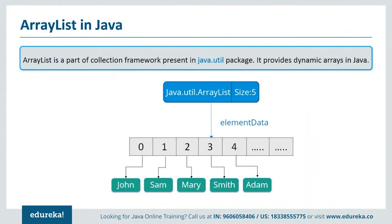ArrayList is a part of the collections framework and is the implementation of the List interface where elements can be dynamically added or removed from the list. The size of the list is increased dynamically if elements are added beyond the initial size, though it may be slower than standard arrays, it can be very helpful in programs where lots of manipulation is required. Key points: ArrayList is initialized by a size, but the size can increase if the collection grows or shrink if objects are removed. ArrayList allows random access, and it cannot be used for primitive types like int or char — a wrapper class is needed for such cases.